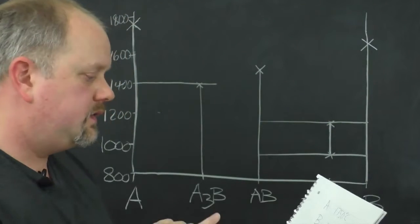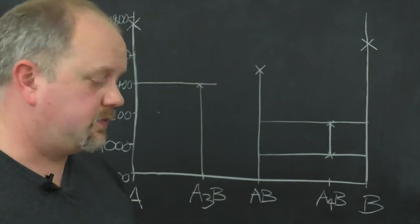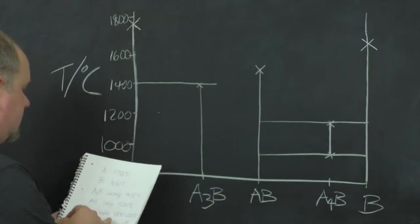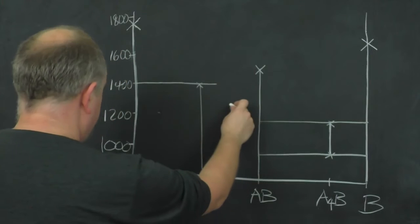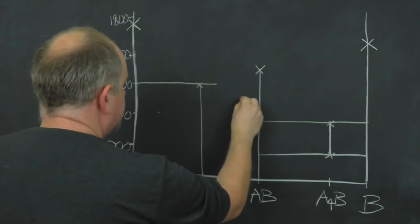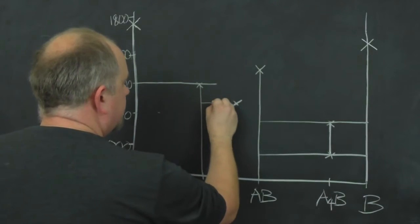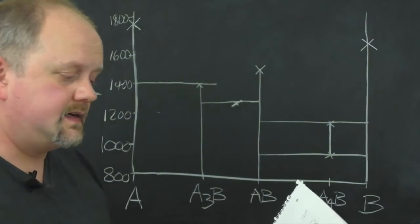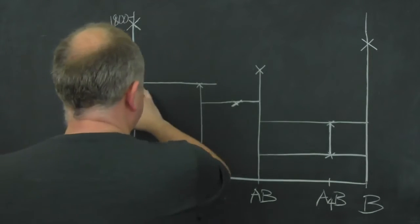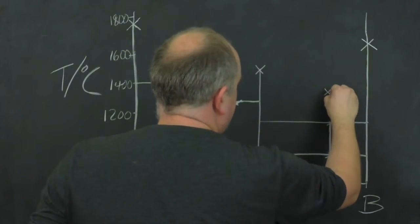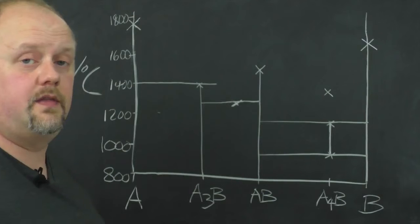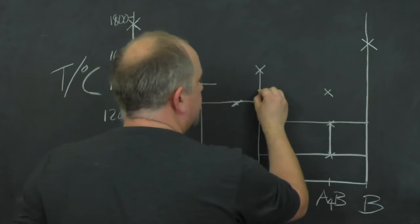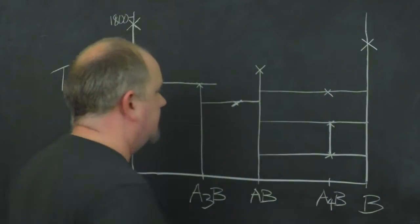We've then got two eutectic points. The first one is at 40B, so somewhere about here, at 1300 degrees, should be about there. So if it's a eutectic, we've got a line going through it. And another eutectic at 80 mole percent B, 1350 degrees C. So that's directly above AB4, somewhere about there. And again, we know it's a eutectic, so we can put another straight line.